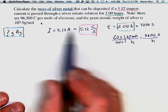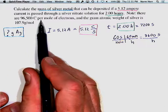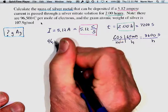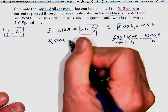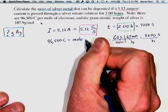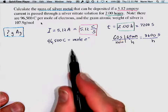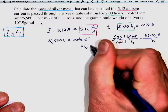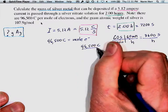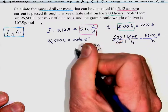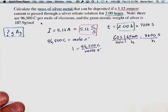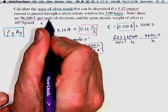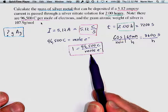Another known quantity is that there are 96,500 coulombs per mole of electrons — that's a definition. We write it as 96,500 coulombs equals one mole of electrons. Since it's a definition, the left and right must be equal, and we can express 96,500 coulombs per mole of electrons as equal to 1.